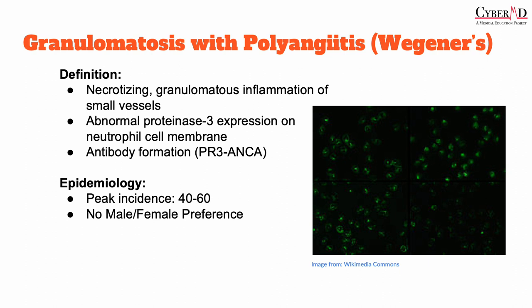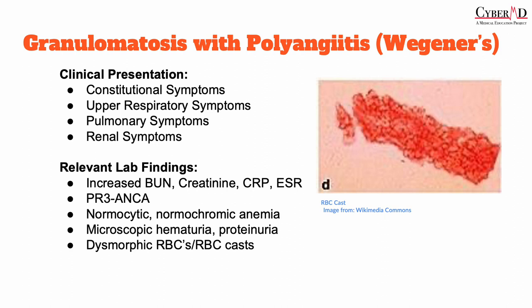Granulomatosis with polyangiitis has a peak incidence of 40 to 60 years old, and the disease affects both males and females pretty much equally. On exams, however, it's classically a male that is given, but be aware it can be male or female. Patients often present with constitutional symptoms including fevers, night sweats, arthralgias, and weight loss. They may also present with localized manifestations such as otitis media, certain ocular conditions, chronic sinusitis or rhinitis, as well as some skin lesions.